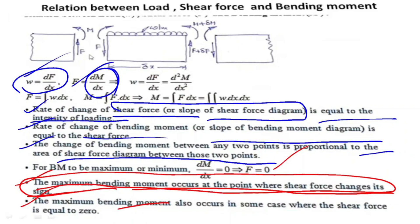The maximum bending moment occurs at the point where the shear force changes its sign. In some cases, the maximum bending moment also occurs where the shear force is equal to zero. This is a very important relation.